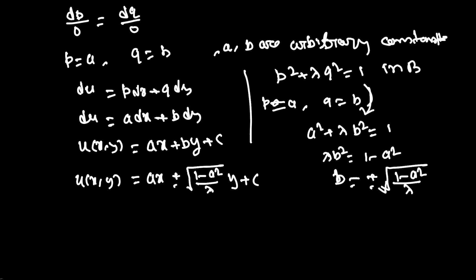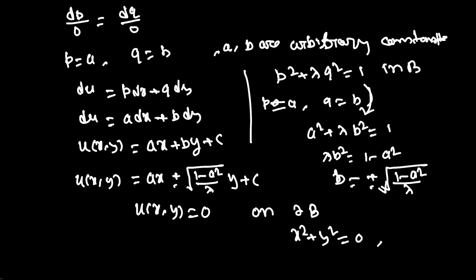Now we know that u(x,y) = 0 on ∂B, which means on the boundary x² + y² = 1.